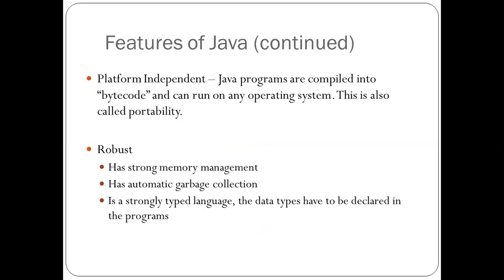Java is robust, meaning it has strong memory management, automatic garbage collection, and is a strongly typed language where data types must be declared in programs. Strong memory management means Java automatically allocates memory when required and reclaims it when no longer needed. Automatic garbage collection reclaims memory when it is no longer required. Being strongly typed means there are different data types such as integer, float, and string, and you must declare those data types at the beginning of a program.